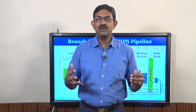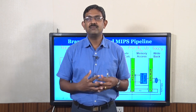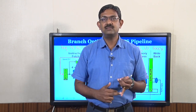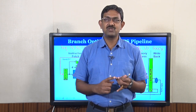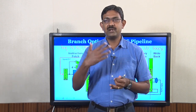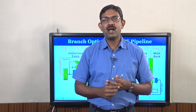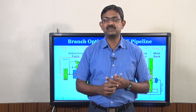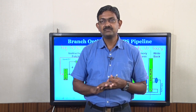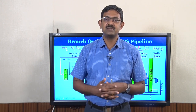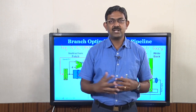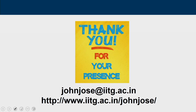Today we have learned what a hazard is and the 3 categories of hazards: structural hazard (same resource used simultaneously), data hazard (dependency between instructions), and control hazard (wrong instructions fetched before knowing a branch outcome). We have seen the mechanisms used to address these hazards. That completes today's lecture. Thank you.